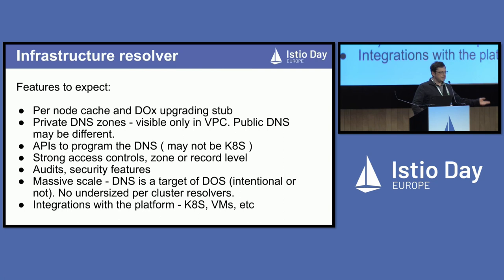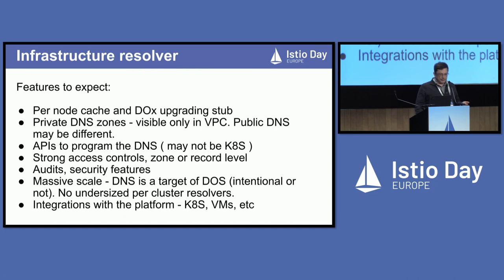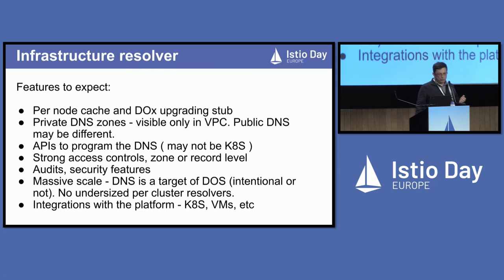As an alternative to Istio DNS, you can use a platform resolver. A platform resolver is what you find in most cloud vendors — they provide APIs to configure private DNS zones and provide a resolver infrastructure. In most cases, you probably already have a secure DNS infrastructure because people have figured out they need security after 40 years of DNS. But it's useful to verify that your DNS infrastructure is set up properly, scaled up, and using access controls. Thanks to ACME protocol and others, there are now libraries that allow programmatic access to DNS. External DNS is an example of using Kubernetes APIs to program DNS, and we'll discuss some automations you can use to take advantage of the existing resolver infrastructure.